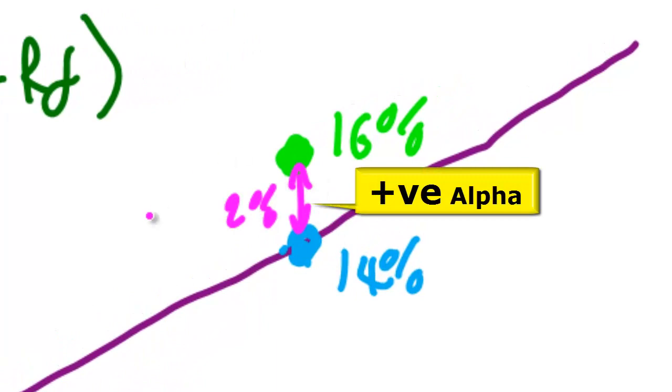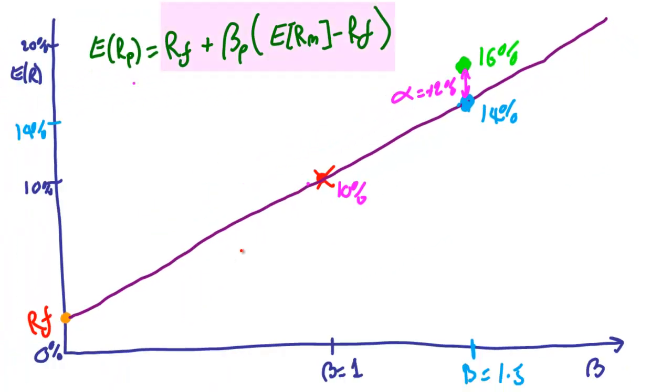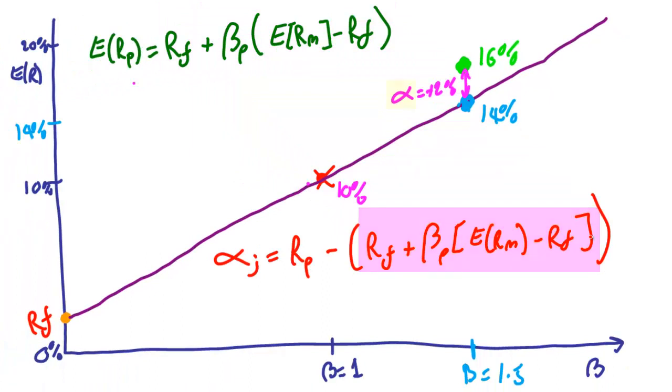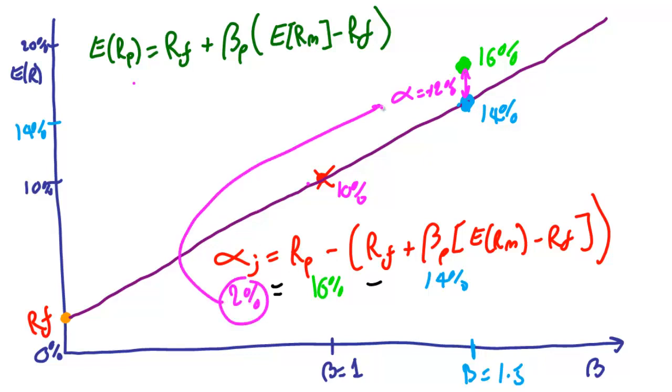We can tell just by looking at it that it's got a gap of 2%. But let's modify the original security market line equation just to prove it. So alpha equals whatever we actually have minus whatever the security market line tells us we should have. We already know the security market line bits, giving us an answer of 14%. Now we put in 16% for the actual return, and so the calculated alpha is a positive 2%. No surprises so far. You buy the stock because it's returning 2% more than it should, and so it's probably underpriced. And hopefully you beat everyone else to it.